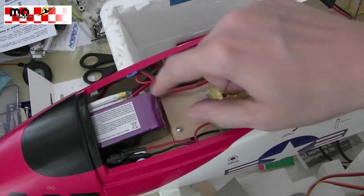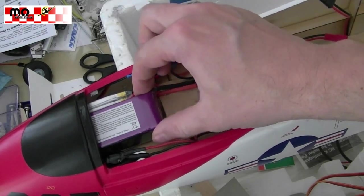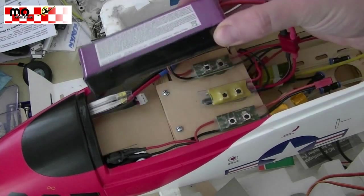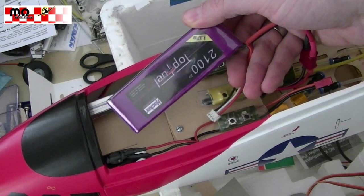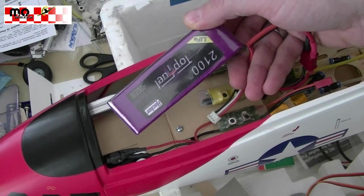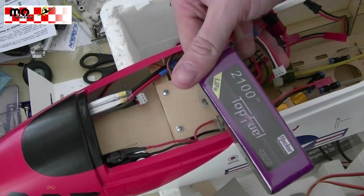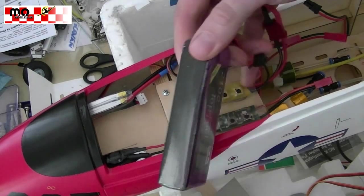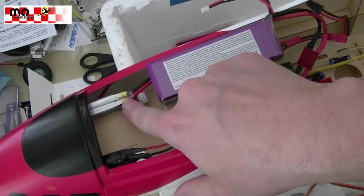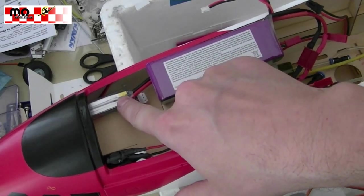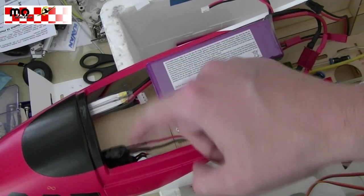What we did is we made a battery mount here which holds the receiver pack. This is a lithium ferrite battery with 2100mAh. That is a LiFe battery with 2100mAh. And we got two small batteries, they are LiPos. This one is for the turbine with a bit more than 1000mAh. This one is for the smoke system with about 700mAh.